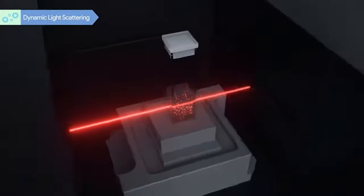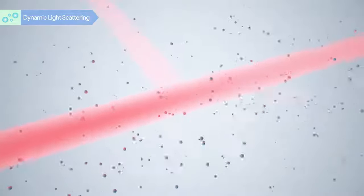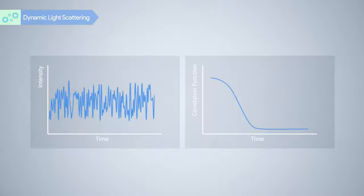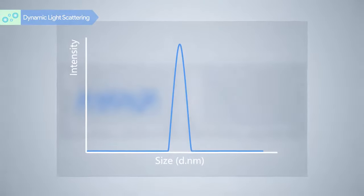Particle Brownian motion causes the intensity fluctuation of the scattered light. DLS measures the fluctuation and through analyzing its correlation as a function of time calculates the particle size and size distribution.